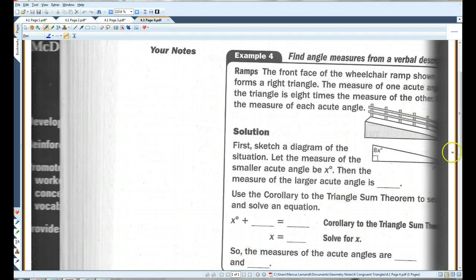Example 4. I apologize once again that it got cut off, but you should be able to see it fine in your notes. The front face of the wheelchair ramp shown forms a right triangle. The measure of one acute angle in the triangle is 8 times the measure of the other. I'm going to put that over here. Find the measure of each acute angle. So, this is what we have. We have this diagram. This angle is labeled x degrees. And this is 8x. It says, first sketch the diagram, which they're nice enough to do it for you. The larger angle is 8 times the smaller angle.